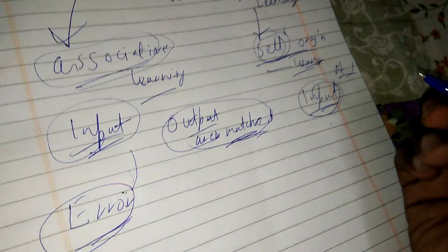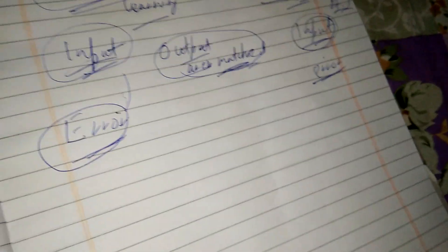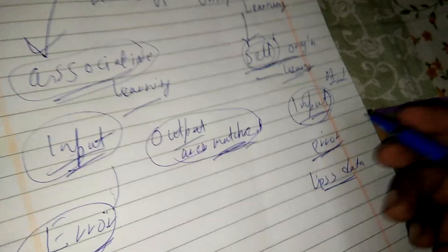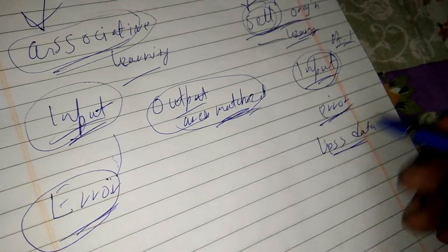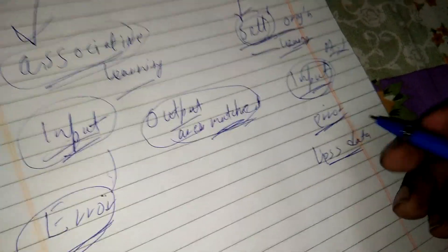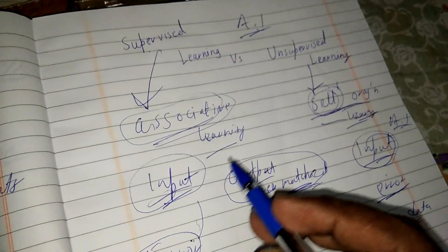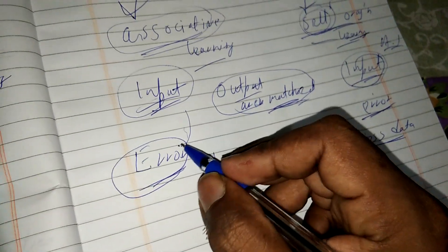In unsupervised learning, nothing is fixed or pre-corrected, so errors are much more. It takes less data because it does not need to accumulate any set of rules — it only has few instructions and works on its own without needing a dataset. But in supervised learning, we need to have a dataset with which data is matched.